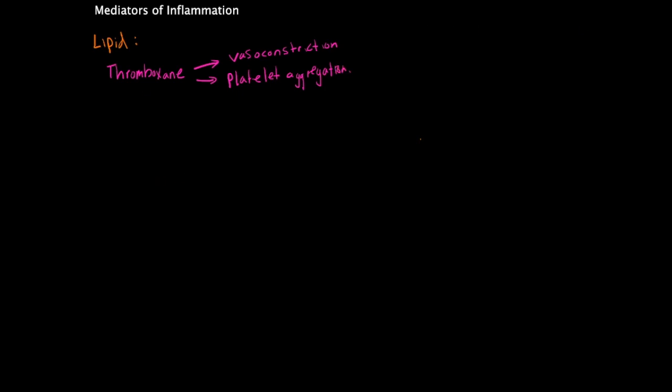Next are the prostaglandins. What they cause are vascular permeability, so the ability for cells like the leukocytes to exit the blood vessels and migrate into the tissue.